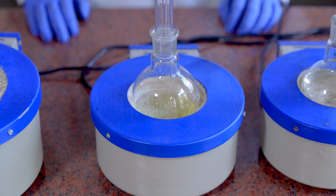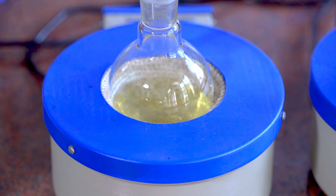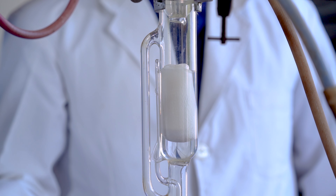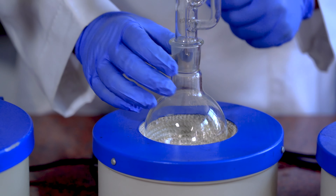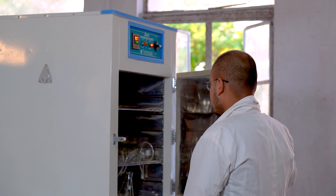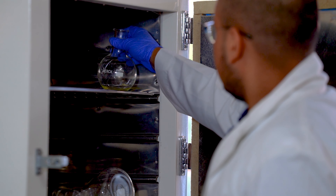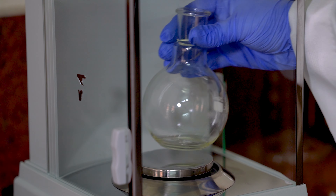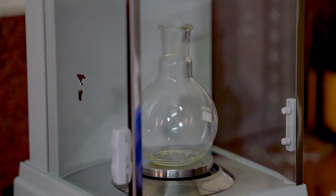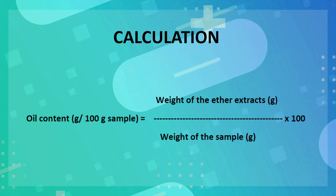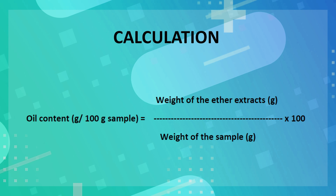Extract oil for a period of 6 hours or longer until the solvent in the extractor becomes colorless. Switch off the heater and evaporate the nonpolar solvent. Keep it in an oven at 70 degrees Celsius for 10 minutes. Weigh the flask after removing moisture. Repeat heating until a constant weight is recorded. The calculation for the estimation of oil content is done using this formula.